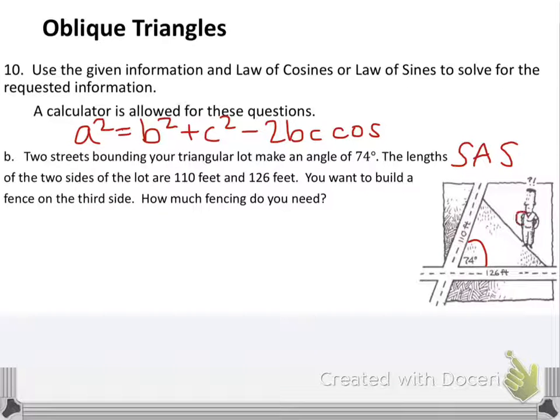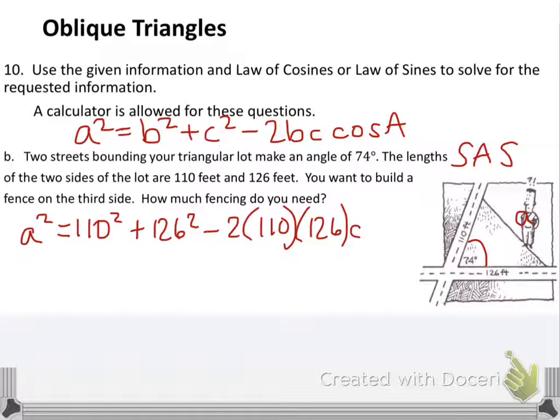This means I'm going to use just the regular version of the law of cosines because I am looking for a side that is opposite my angle. You notice 74 degrees, I'm looking for this side over here. All I have to do is plug my information into the formula itself. That's going to become 110 squared plus 126 squared minus 2 times 110 times 126 times the cosine of 74 degrees.